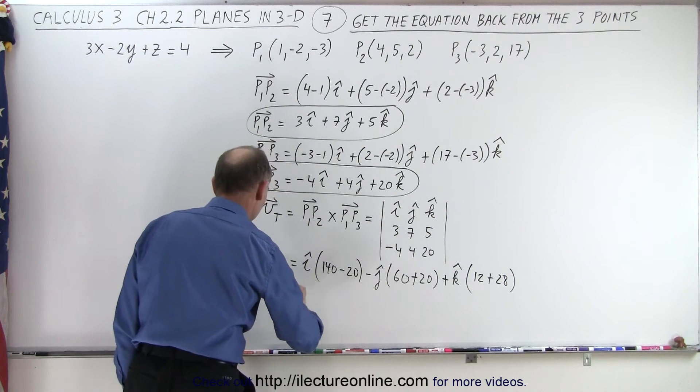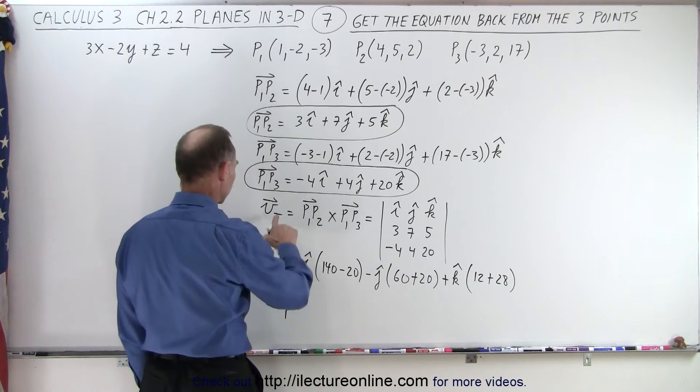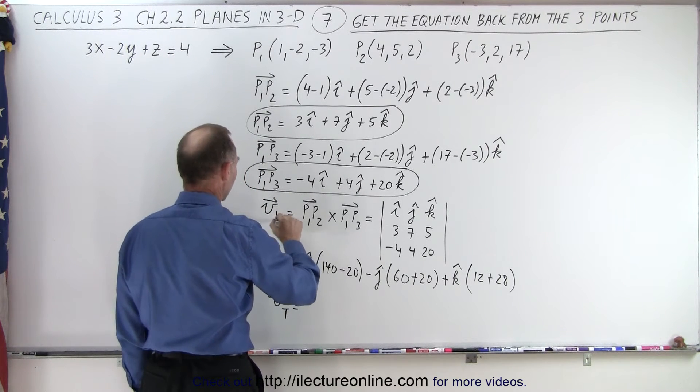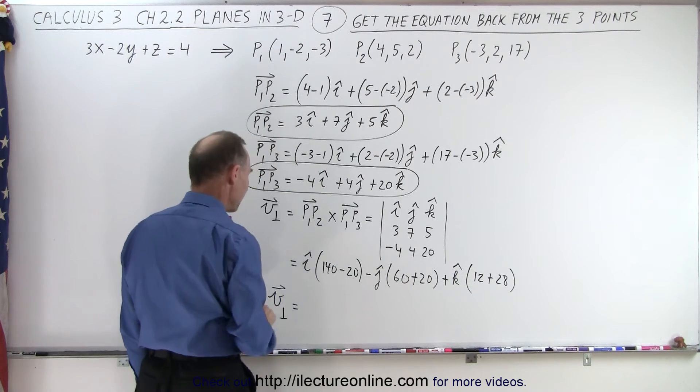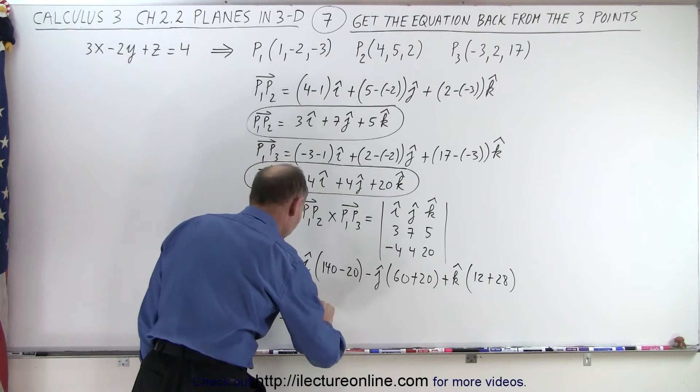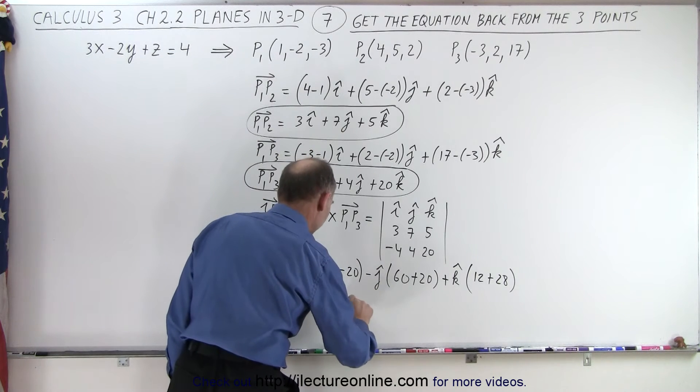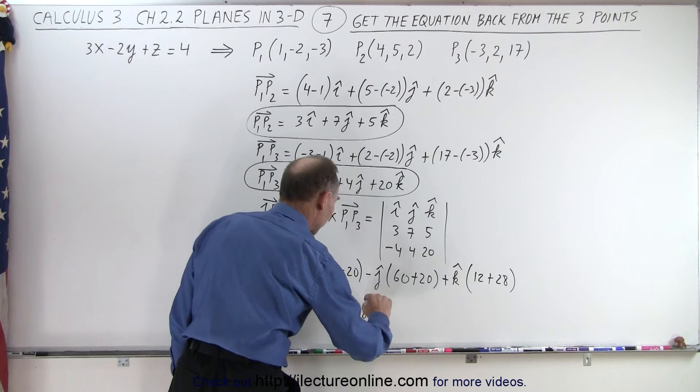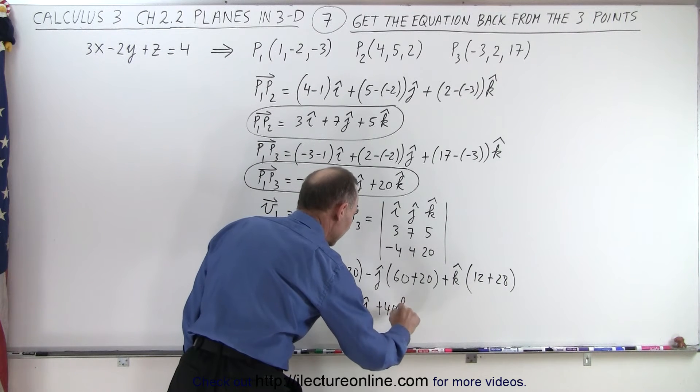Simplifying that, we find that the perpendicular vector is equal to 120 in the i direction, minus 80 in the j direction, and plus 40 in the k direction.